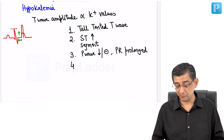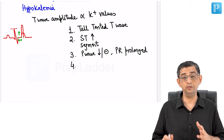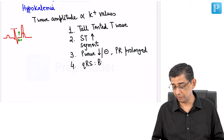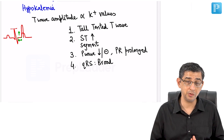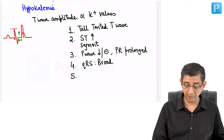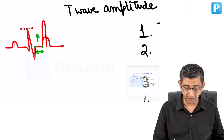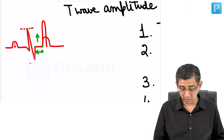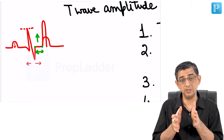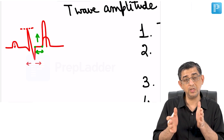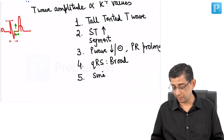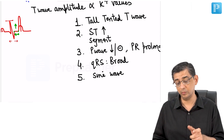Since potassium slows the heart, the QRS complex will also become broader — similar to what we see in ventricular tachycardia and Torsades de Pointes, but the mechanism here is different. Mentally visualize what is happening: the P wave is disappearing and the QRS is broadening. When the broad QRS merges with the T wave, the result is what is called a sine wave pattern, which is very characteristic of severe hyperkalemia.